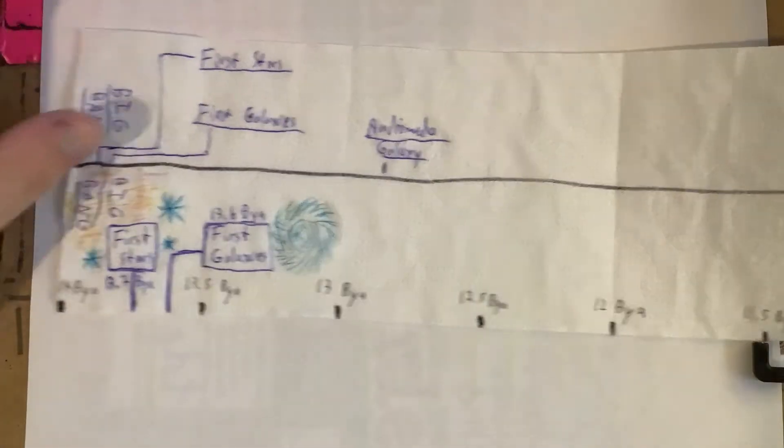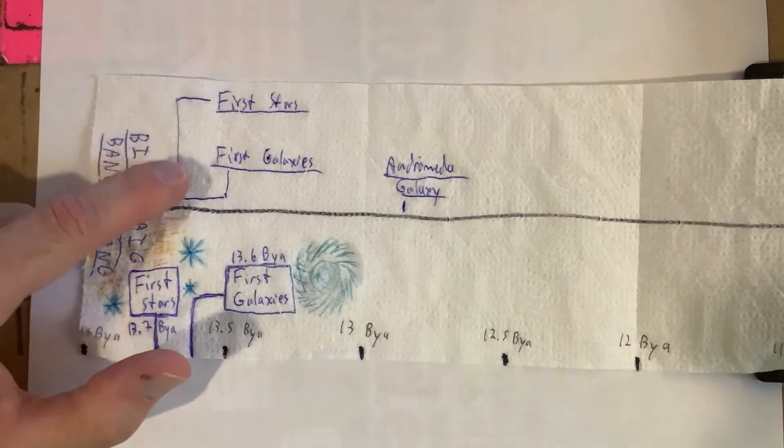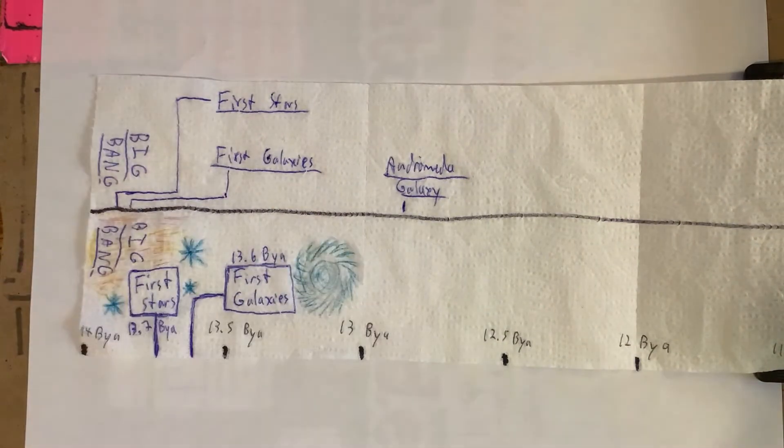Hey everybody, here's my timeline. I added some decorations to it, as you can see. In my guessing I was a little bit off in terms of the first stars, galaxy formation, and when the Andromeda galaxy occurred. I thought those happened much longer ago.